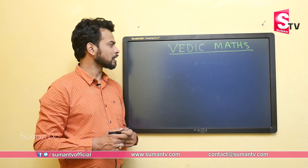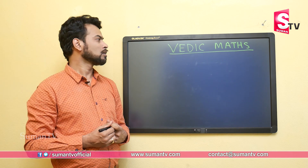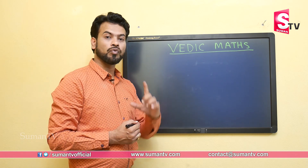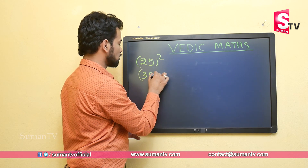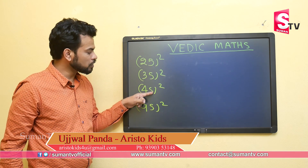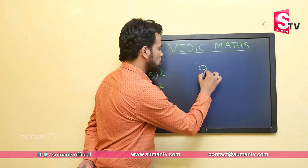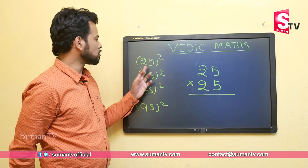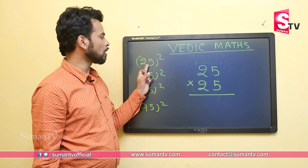Let's start with some interesting tricks. I will tell you the first trick: how to find squares of different numbers. We will start with a very easy one — we will find the squares of numbers ending with 5, such as 25 square, 35 square, 45 square, 95 square — all numbers whose unit digit is 5. A square means the number multiplied by itself.